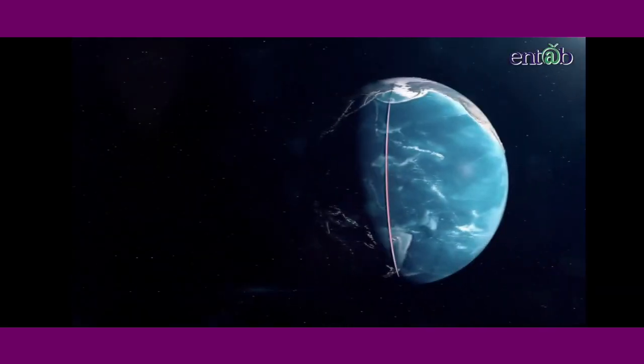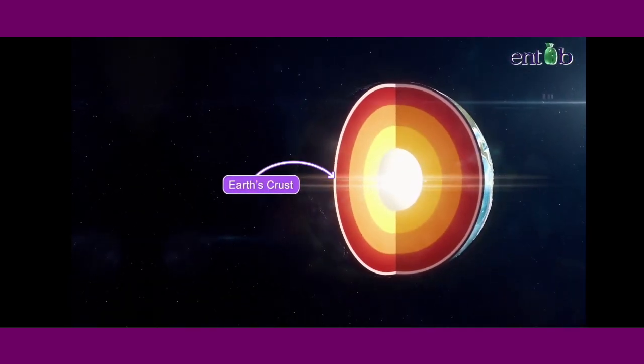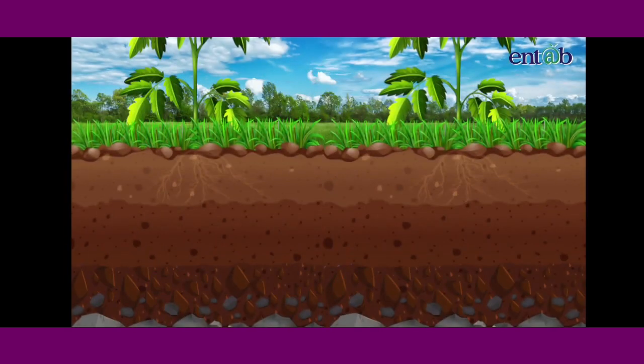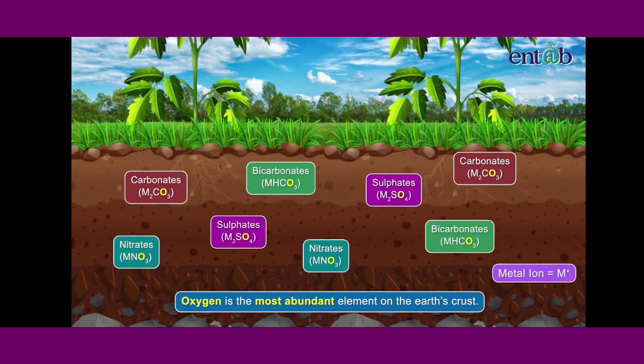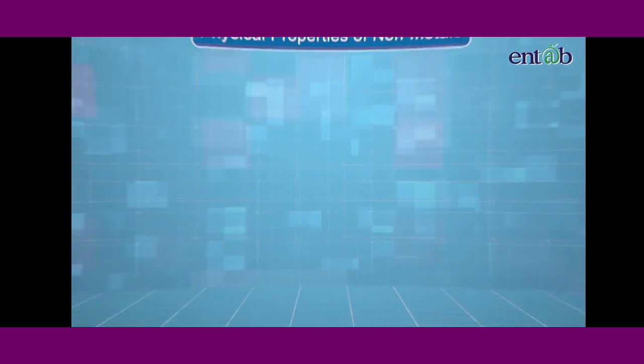Nonmetals are more abundant on earth. Oxygen is the most abundantly available element on the earth's crust.